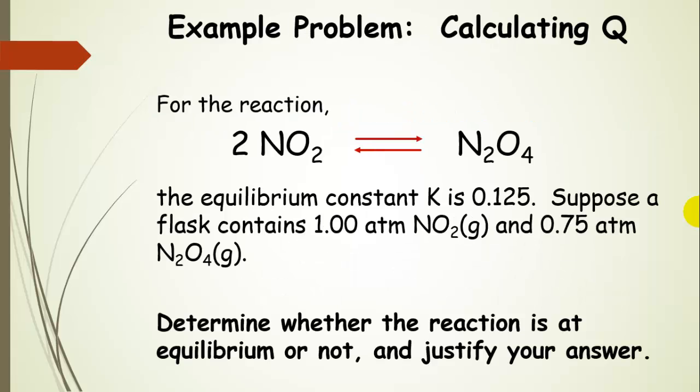Okay, so let's do an example problem. So we have our reaction where we have nitrogen dioxide dimerizing and forming dinitrogen tetraoxide. And we know our equilibrium constant. So K is equal to 0.125.